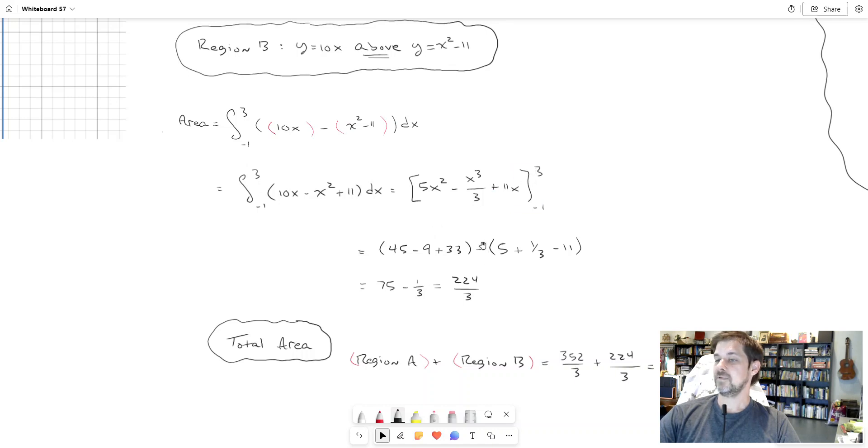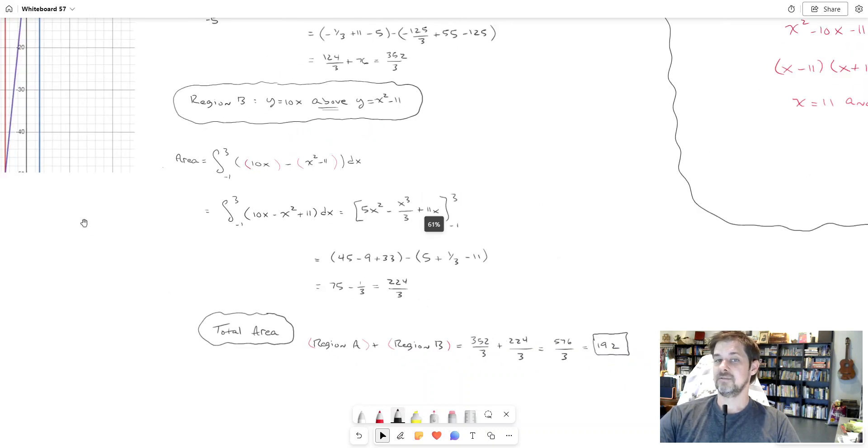From there I find the antiderivative again. I put 3, the upper bound in, I get these numbers. I put a subtraction, then I put the negative 1 in. That tool or technique for evaluating a definite integral - meaning find the antiderivative of what you start with and put the bounds in - was also covered in a previous video called the fundamental theorem of calculus. Putting the 3 in and then subtracting, putting the negative 1 in, these are the numbers I get. I do the arithmetic from there and I get 224 over 3.